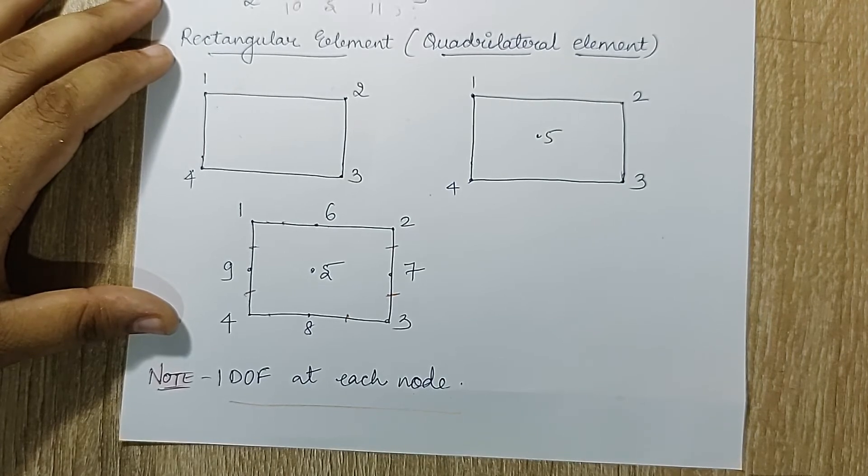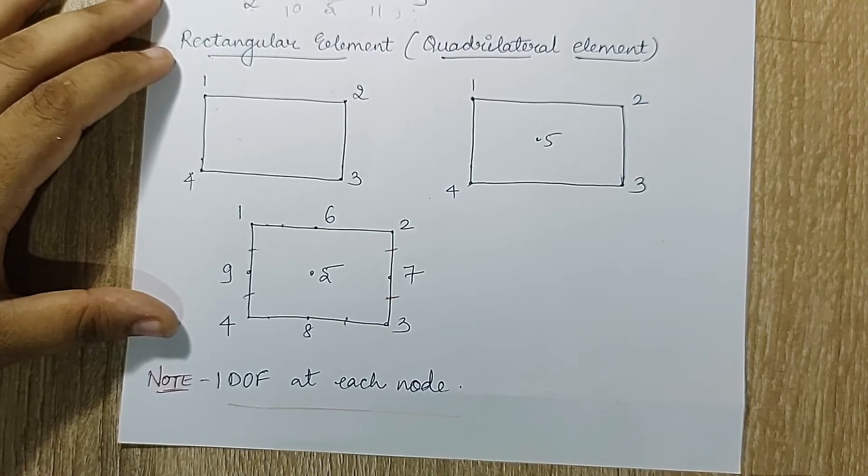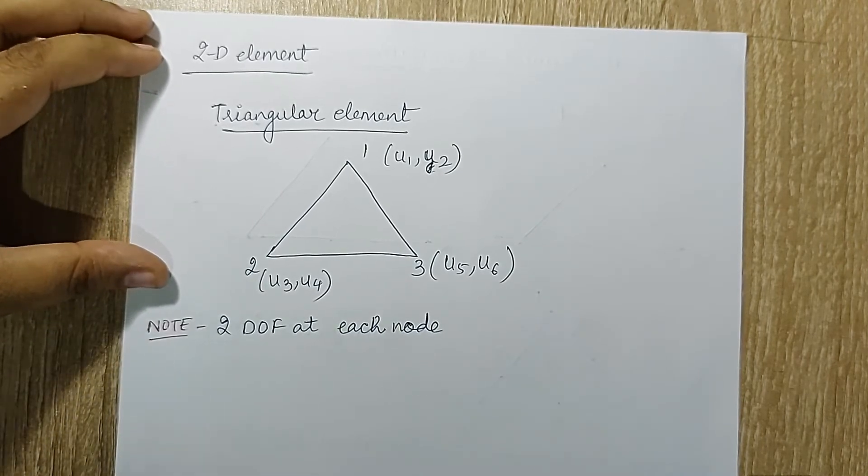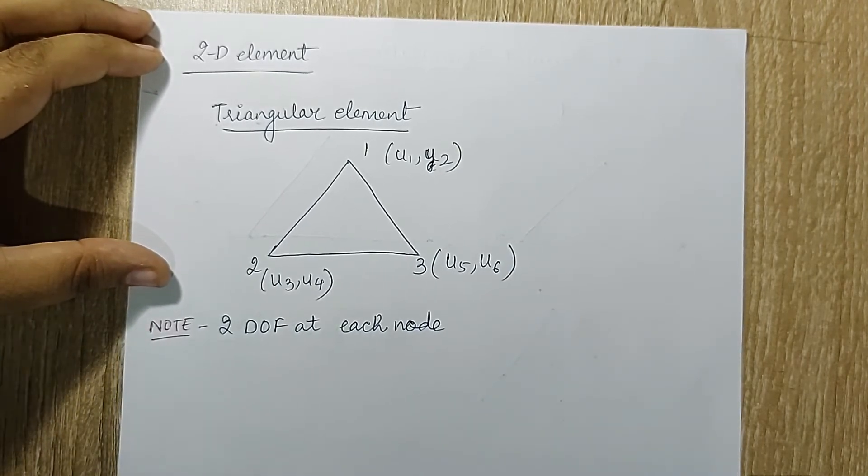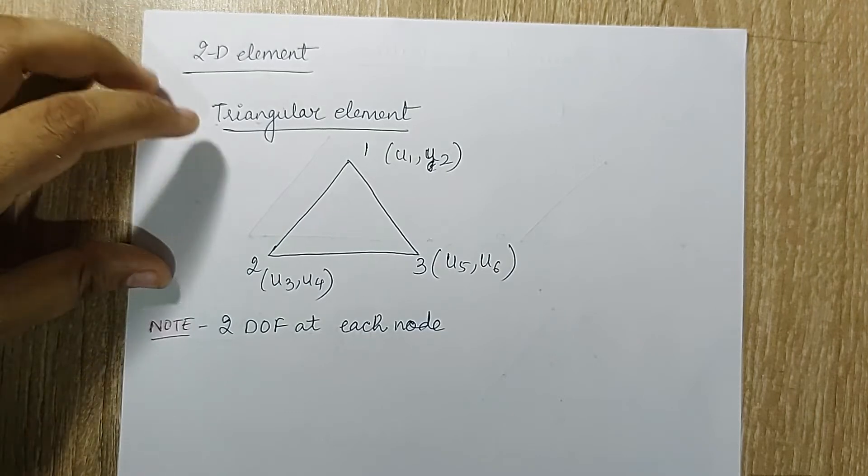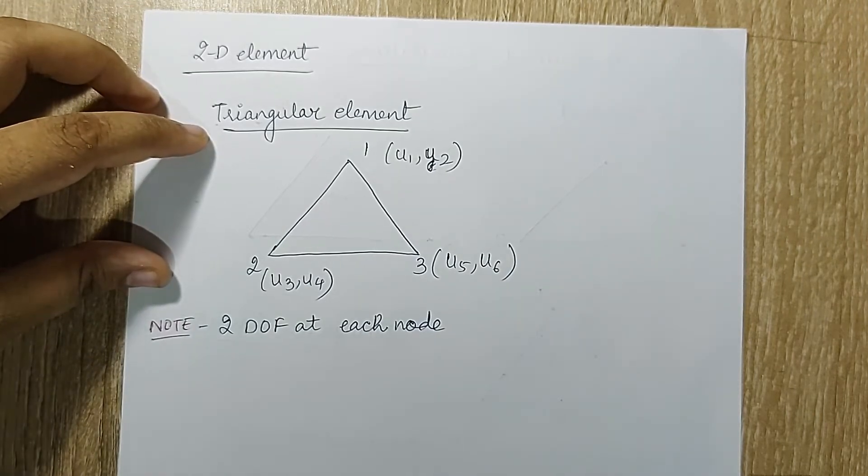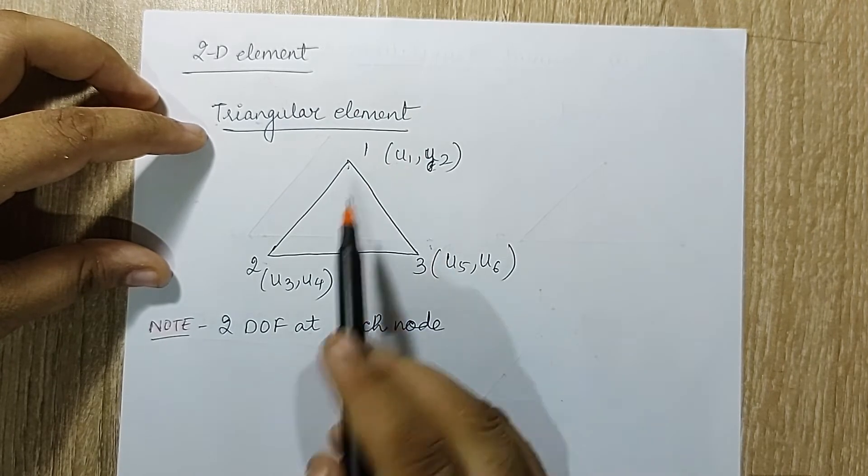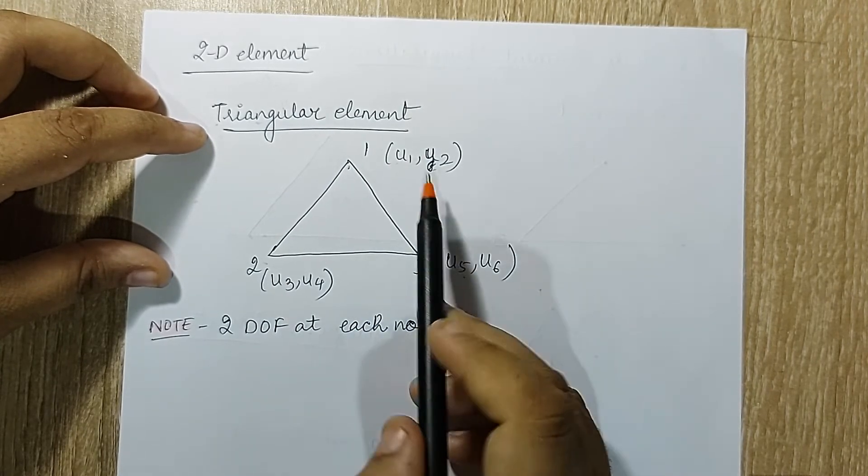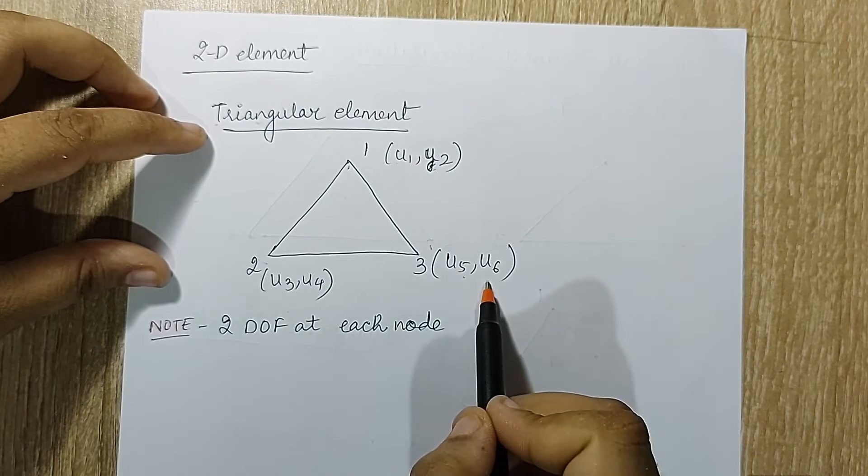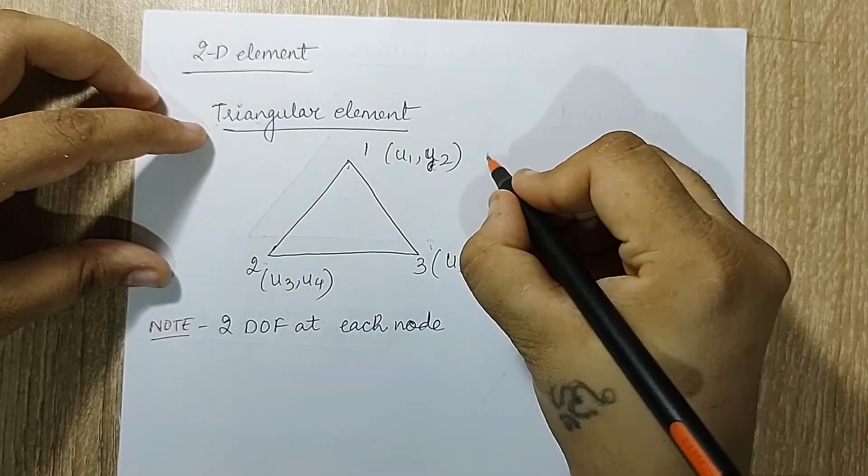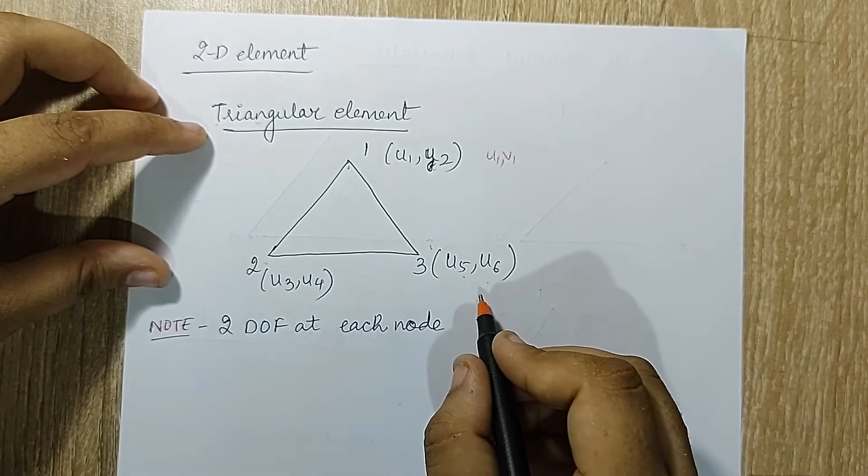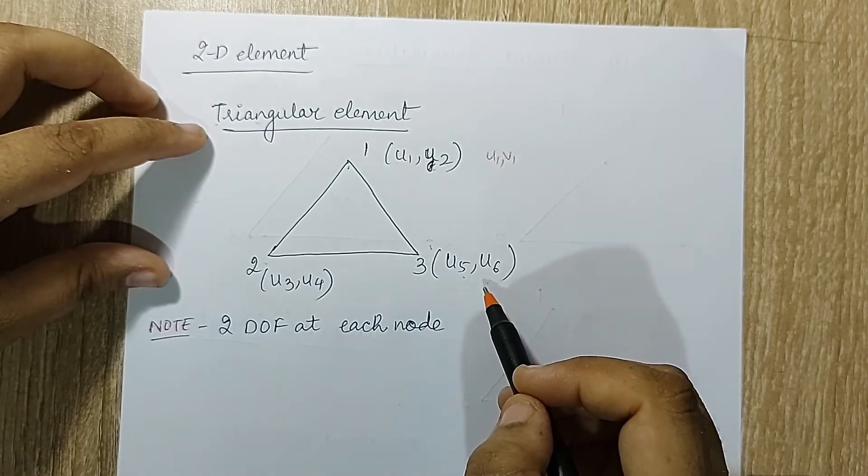Next, we'll talk about 2D element, something which is very important and required in this chapter. In 2D element, let's take a triangular element with three nodes at three vertices. At each node I'll have two displacements: u1, u2, u3, u4, u5, u6. You may also say this is u1, v1, u2, v2, u3, v3—that is completely your choice. There's nothing like marking the way I have written.